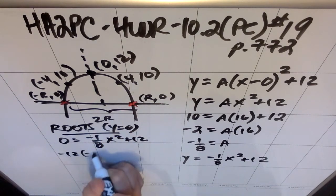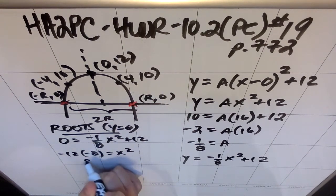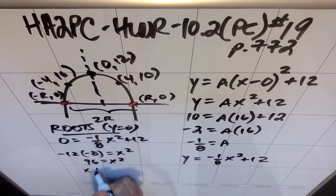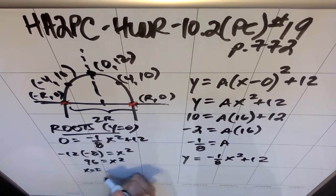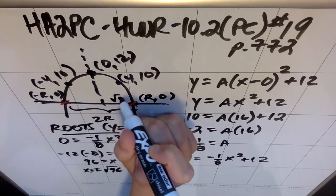I'll subtract the 12 over and then multiply by negative 8. And so I end up getting 96 equals x². So x is essentially plus or minus the square root of 96.